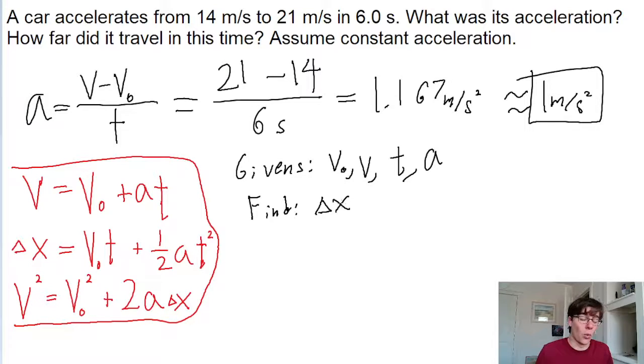Because we're given four of the five variables that these equations account for, we can use any equation as long as it has the variable we need. This first equation is completely useless to us because it doesn't have delta x in it, but we can use either of the other two equations.